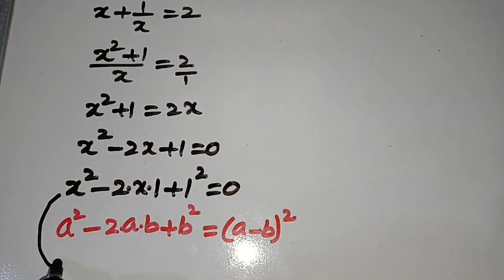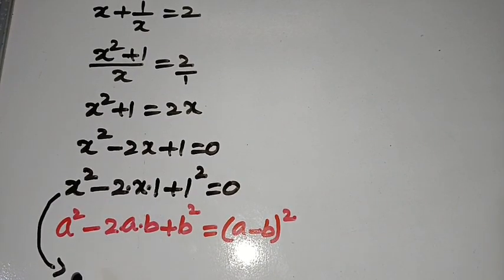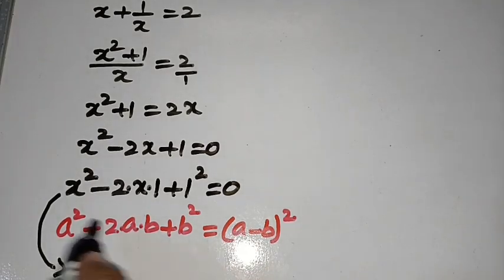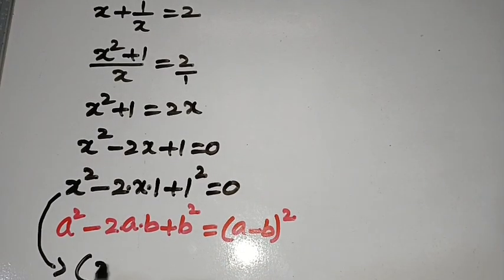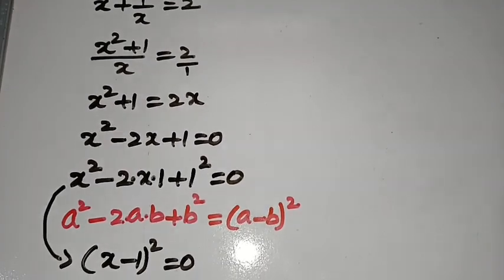Therefore, this x square minus 2 times x times 1 plus 1 square can be written as x minus 1 whole square is equal to 0.